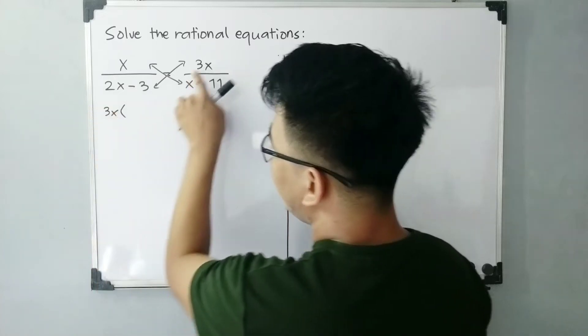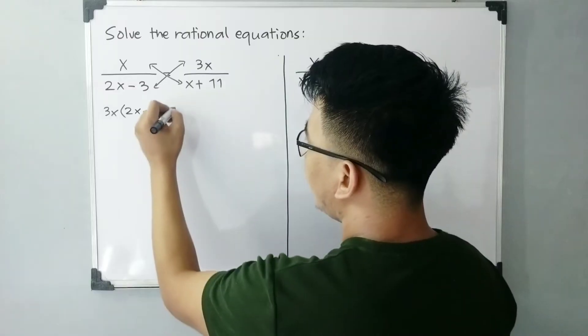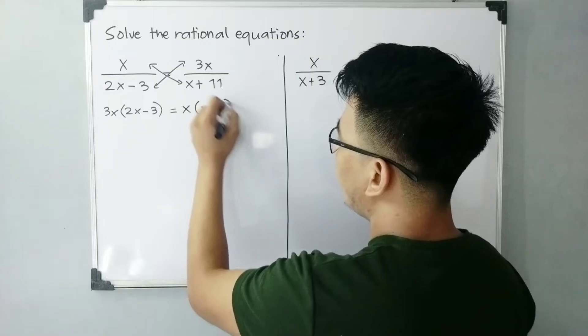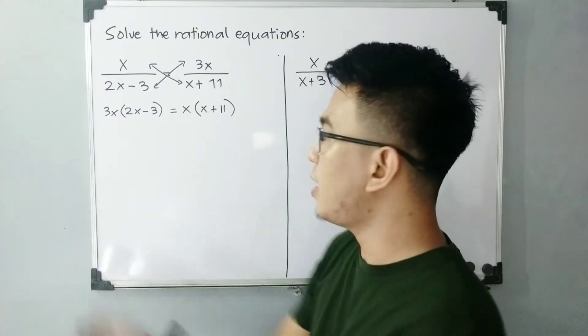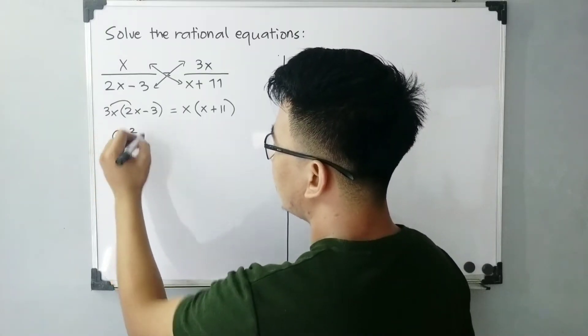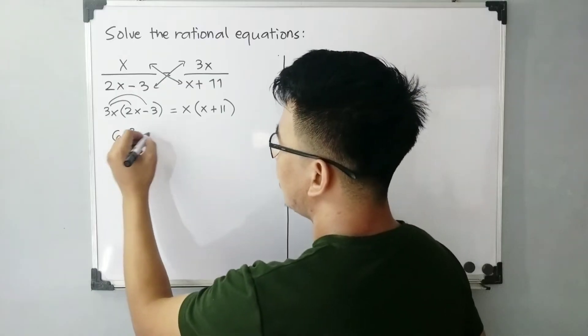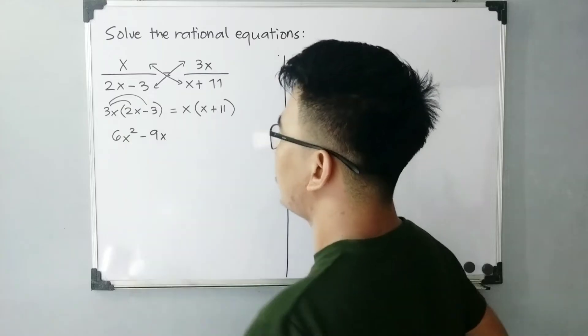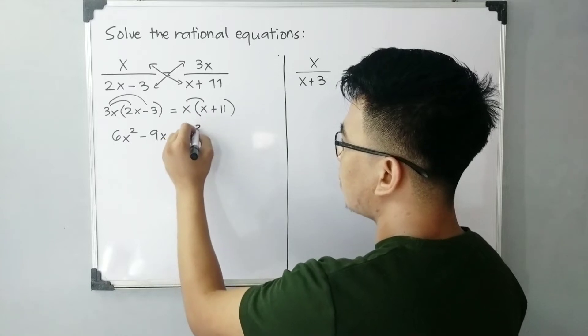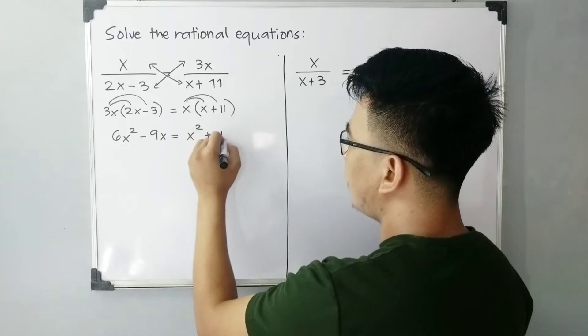So I will try to multiply 3x by 2x minus 3 and then equal to x times x plus 11. So I need to use distributive property: 3x times 2x that will give you 6x squared and then 3x times negative 3 that is negative 9x. Then equal to x times x, that will give you x squared, x times 11, that is plus 11x.